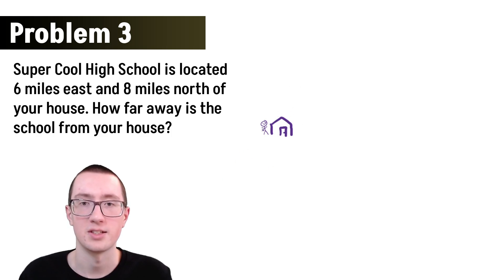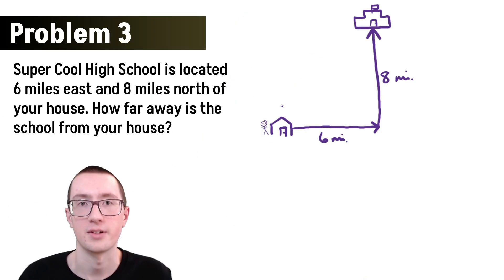Let's go ahead and draw a little house. Give myself a little smiley face. Don't do this on the ACT, it's a waste of time. So then let's just go ahead and draw what we know. We know that super cool high school is six miles east. So let's go ahead and draw a little arrow going to the east, and we can label this as six miles. And now it says that it's eight miles north, so we need to go eight miles up, and we can label this eight miles. And then here we have our school. This kind of looks more like a castle than a school, but maybe your school is a castle.